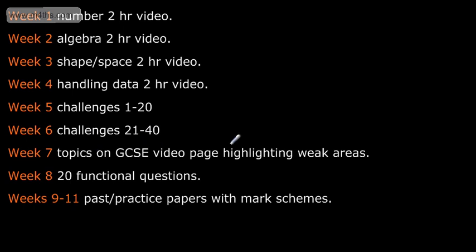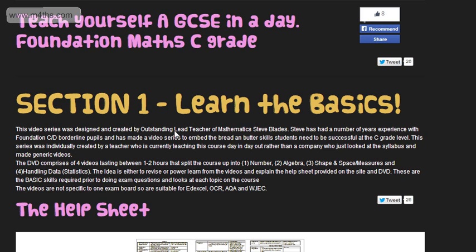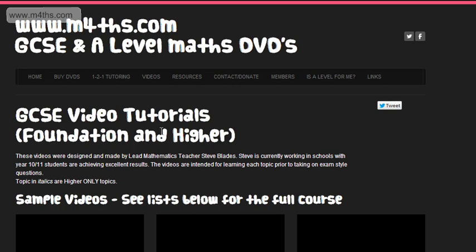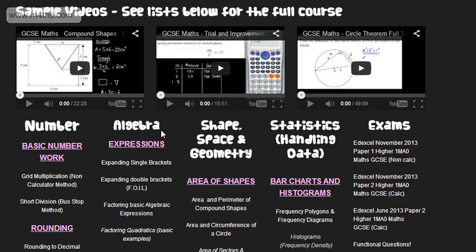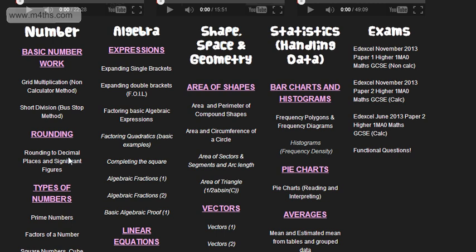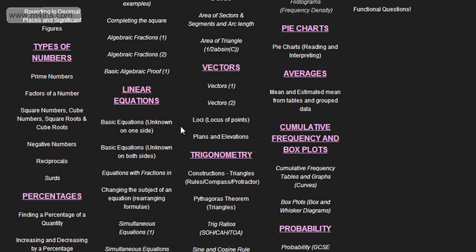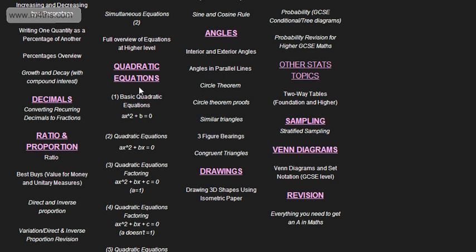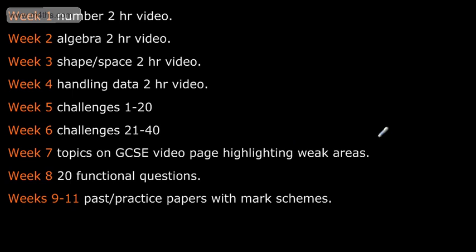Topics on GCSE video page highlighting weak areas. So if we go back now, we can find these on the video section. So if we look at videos, GCSE videos, we can go through all of the topics we don't really like. So for example now, if your multiplication skills aren't brilliant, grid multiplication or non-calculator multiplication. If you need to round, rounding. So pick some topics on here and work through them. So this is going to bolster your good, quality, basic skills. In these videos, again, these are going to be added to as we go. There are some good, straightforward examples and some more challenging ones. So that would be week number 7.